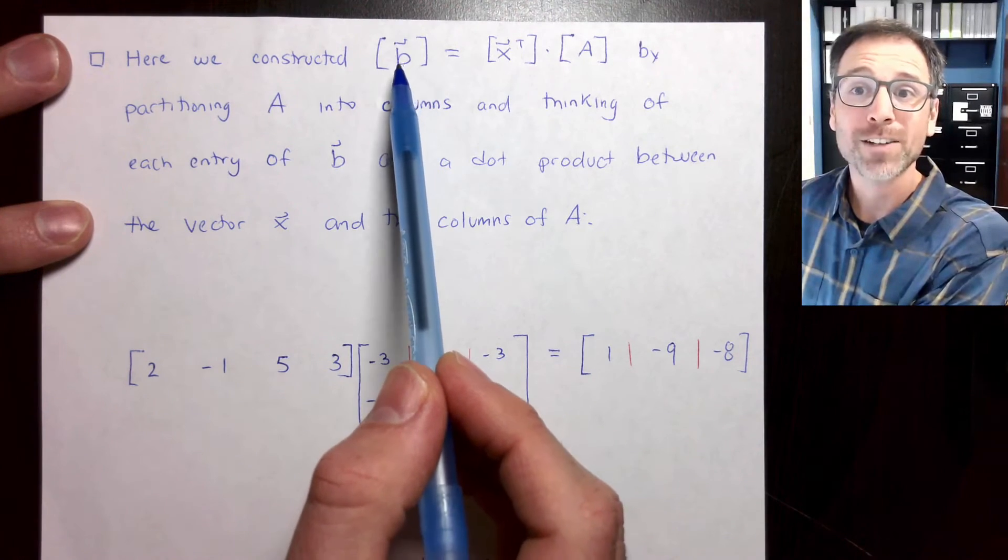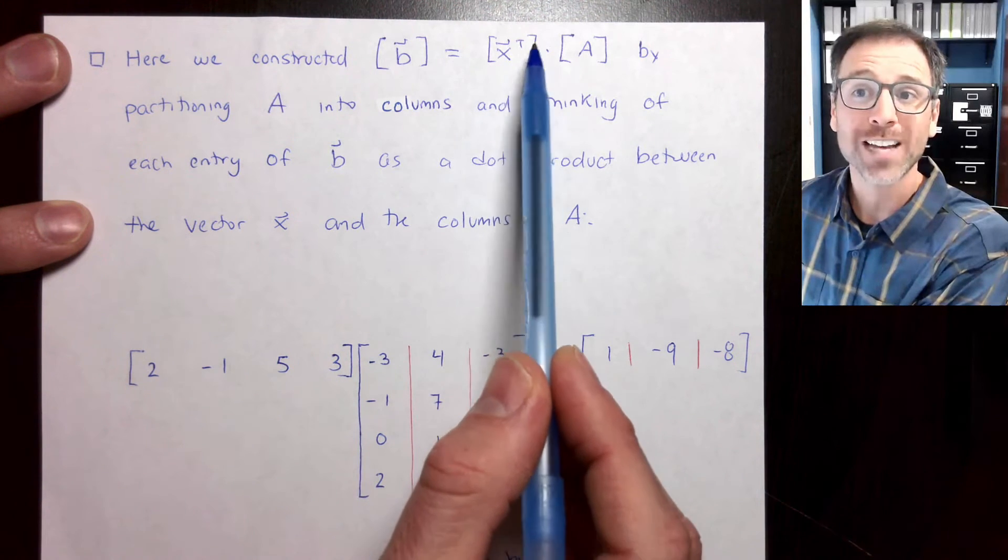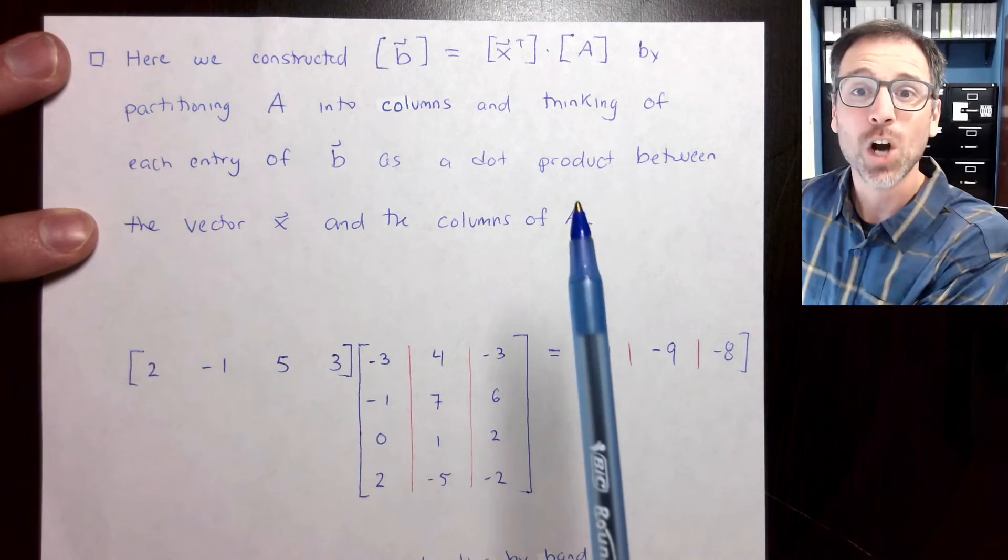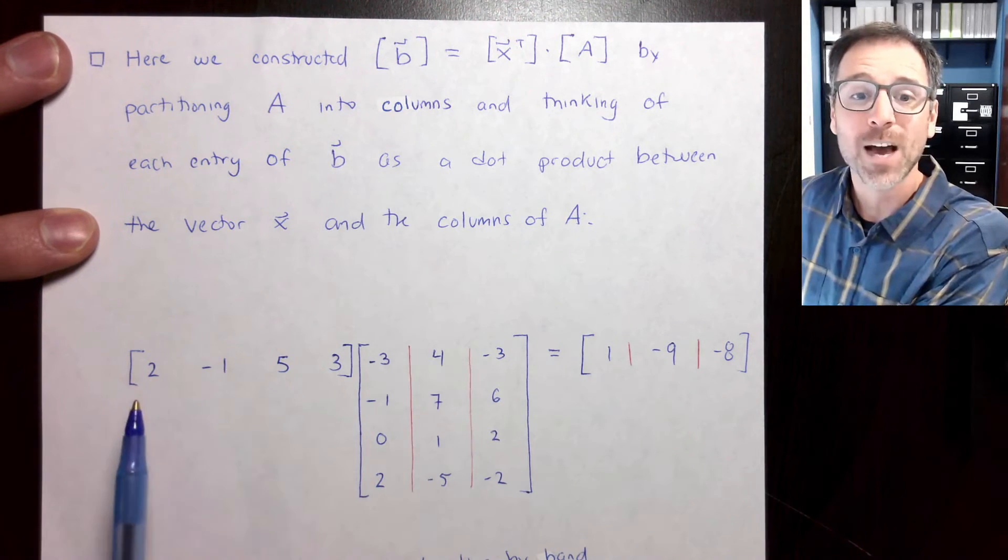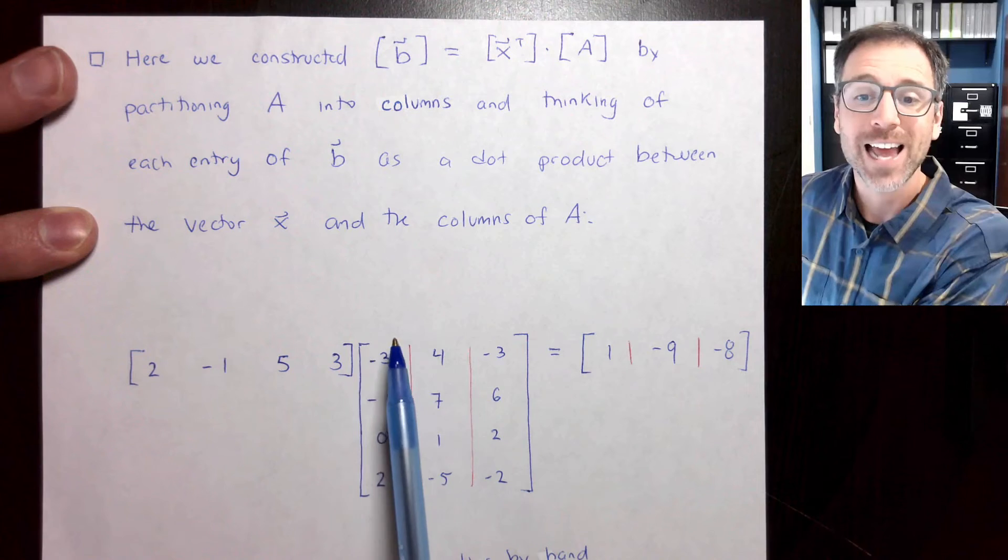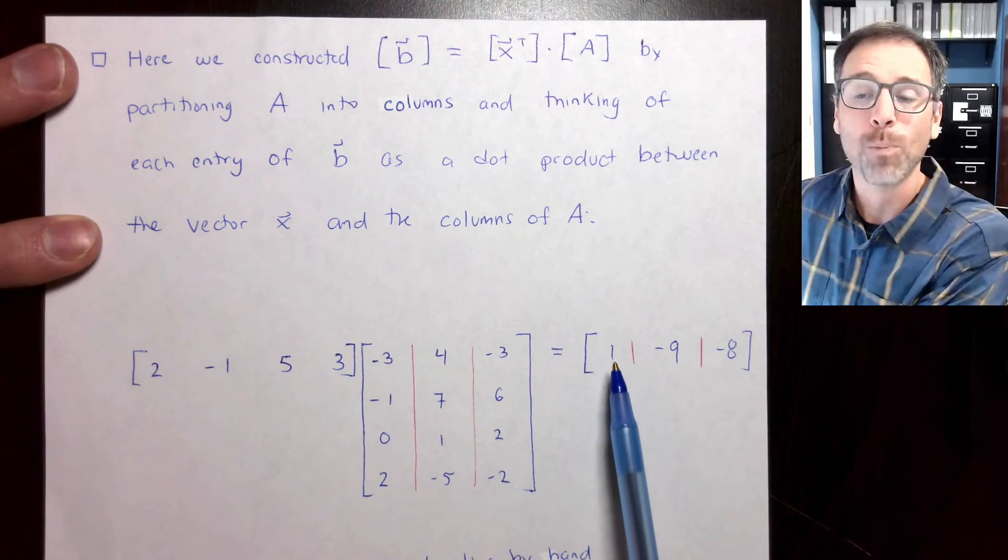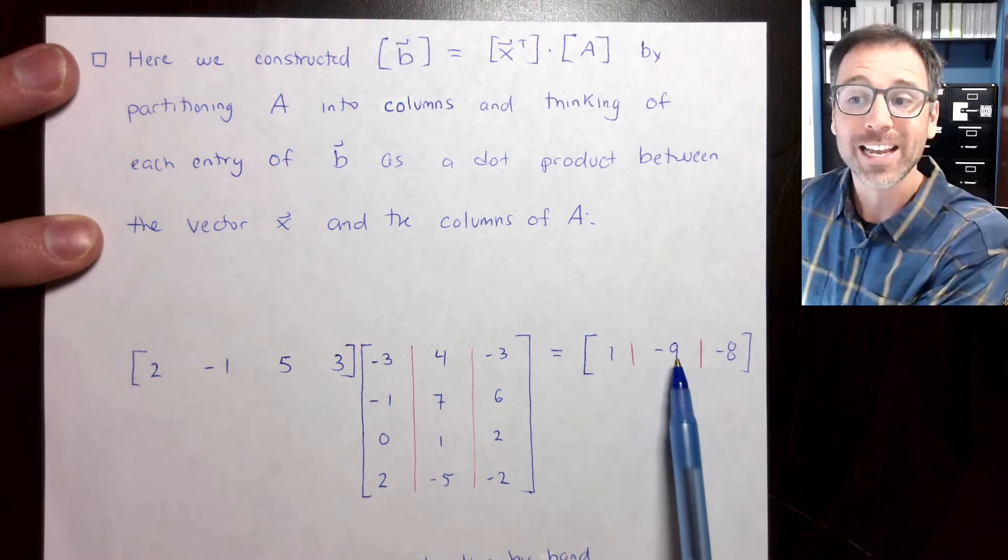In this example, we've constructed the vector b, which was the row vector x transpose multiplied by the matrix A. By partitioning A into columns, I'm thinking of each entry of b as a dot product between the vector x and the individual columns. Our guess in this case was that that output vector was going to be 1, negative 9, negative 8.